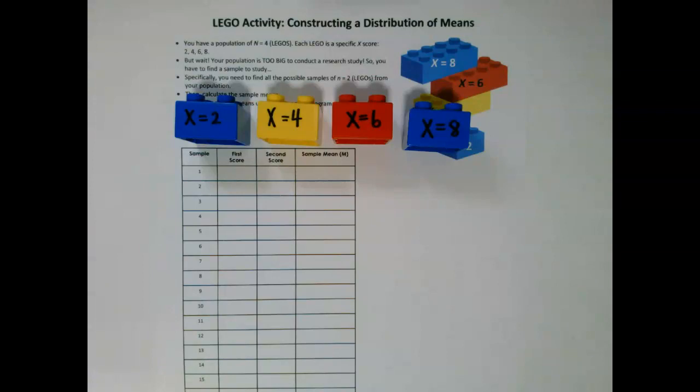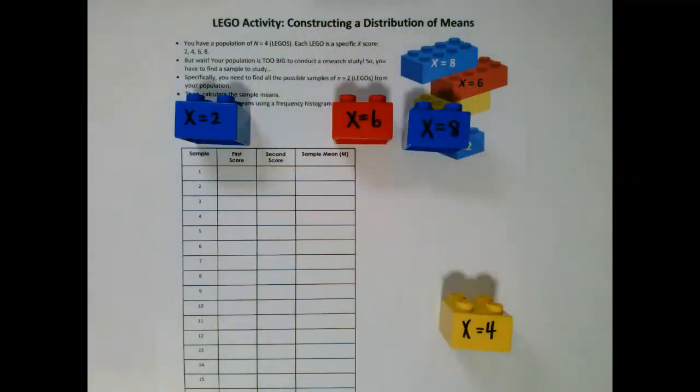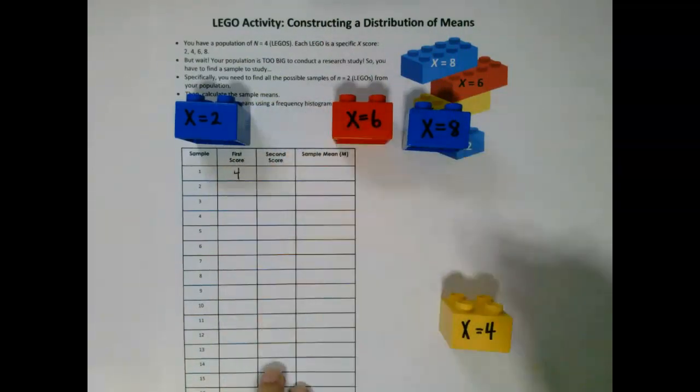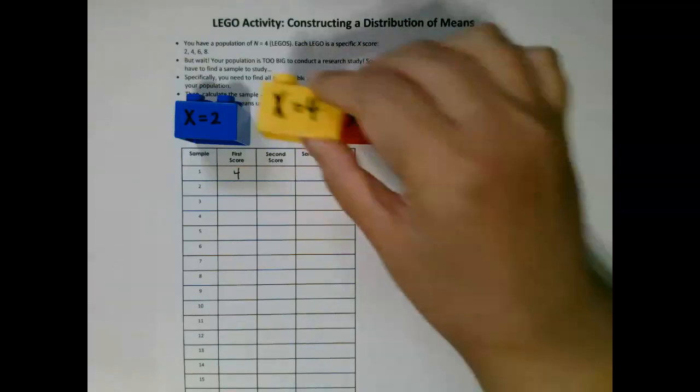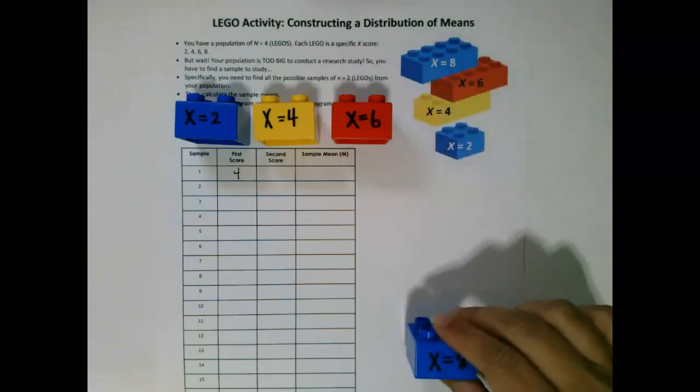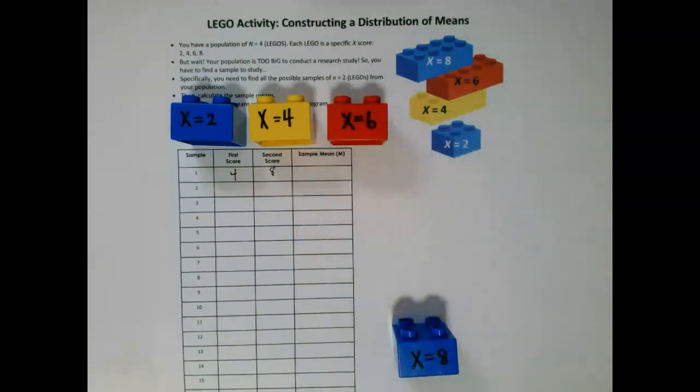The first sample has to consist of two scores. So imagine randomly selecting X equals 4. This is considered your first score. And then we put the Lego brick back into the population, and then we randomly select a second Lego brick. Let's say X equals 8. You now have your first sample.